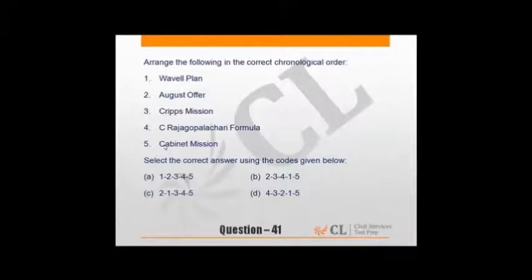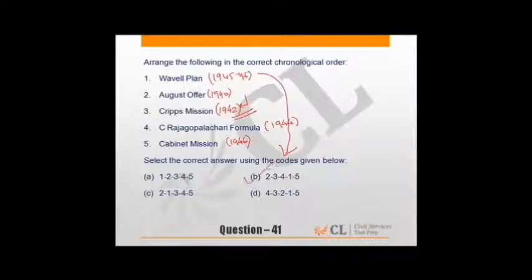Arrange the following in correct chronological order. Let's see: Wavell Plan famously in 1945-46. August offer in 1940 at start of World War. Cripps Mission when British were in trouble, when Nazis were everywhere and Japanese on borders of India, so 1942. C Rajagopalachari Formula after in 1944 when many options failed. Cabinet Mission Plan finally came in 1946 to seal the fate. So the correct option here is 2, 3, 4, 1, 5.